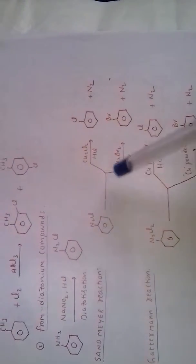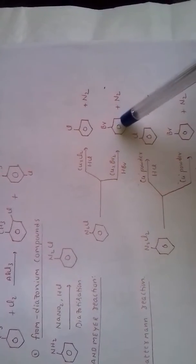This bond shifts onto N2. N2 gas is liberated. Phenyl cation then combines with Cl- to form chlorobenzene. Phenyl cation combined with Br- forms bromobenzene.